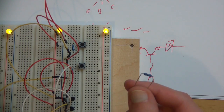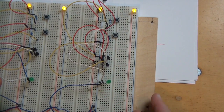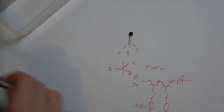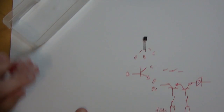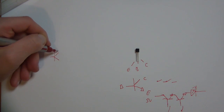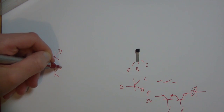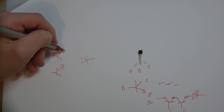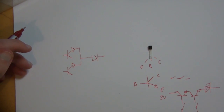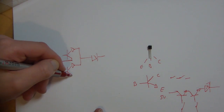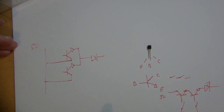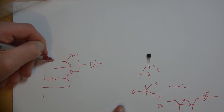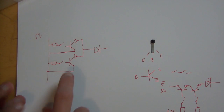The next thing is the OR gate. The OR gate we remember was just two switches in parallel, so we have to build two switches in parallel with transistors. That's easy enough: one transistor, two transistors, with our LED. That's two in parallel. They both need five volts, and they both need switches with resistors. And there we have it — this is our OR gate.